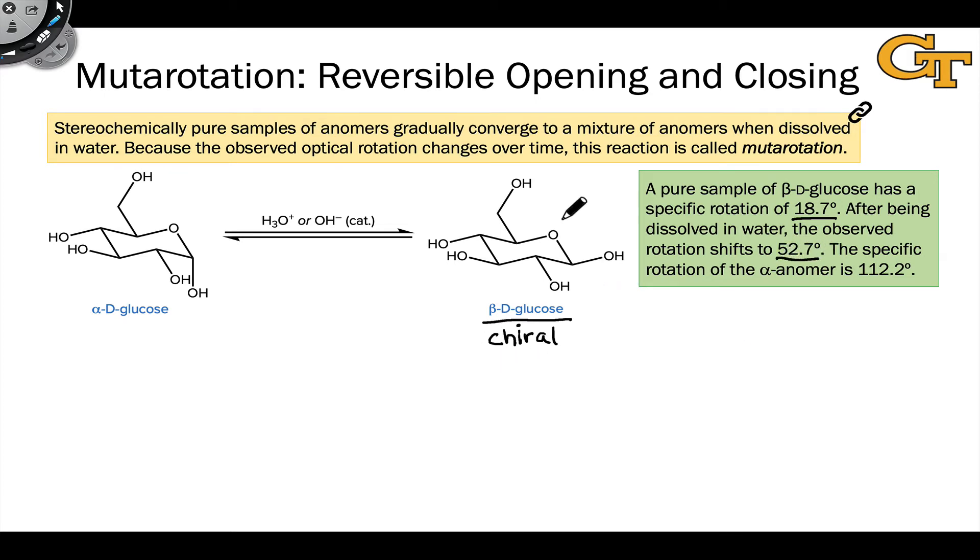Something's happening to change the structure of beta-D-glucose, and what's happening is the formation of alpha-D-glucose in a reversible reaction. The specific rotation of the alpha anomer is 112.2 degrees.